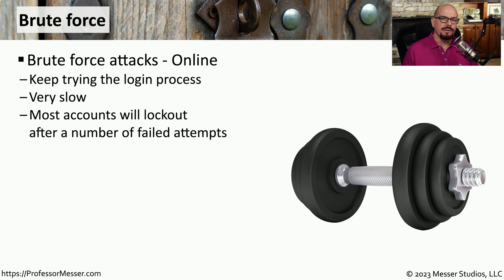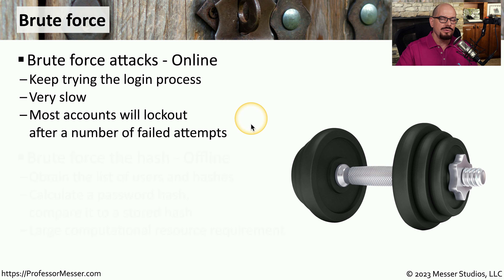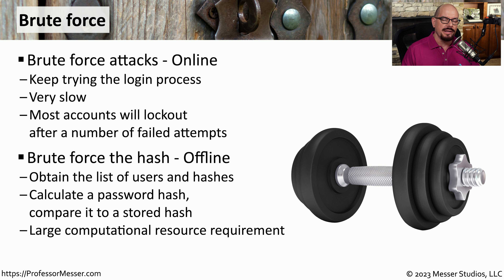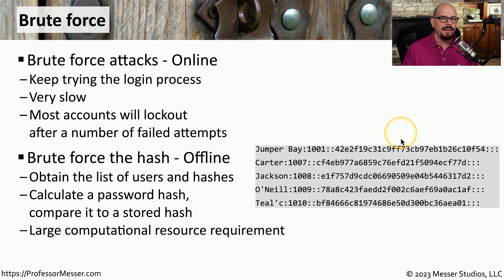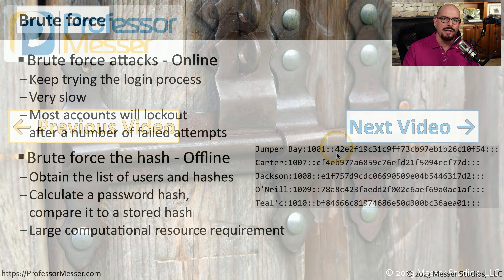As already mentioned, it's very common for accounts to automatically lock when too many incorrect password attempts are made. That's why an online brute force attack is very slow — you may only be able to make a request once or twice a day, and the account could eventually lock out. Instead, most attackers handle brute force by downloading the file that contains all of the password information — typically a list of usernames, a name ID or group ID, and the hashed password itself. Once the attacker is offline, there's no concern about account lockouts. They can perform as many brute force attacks as they like over whatever time frame they choose. As long as the attacker has enough time and enough computational resources, they can try every possible hash until they find one that matches the information stored in the password file.